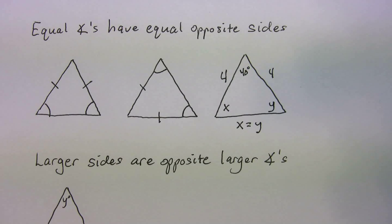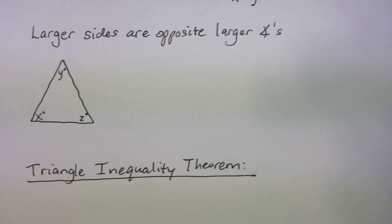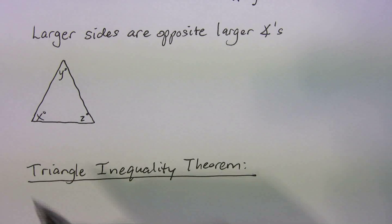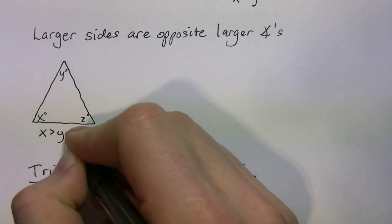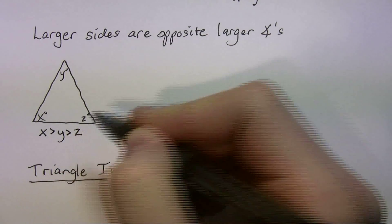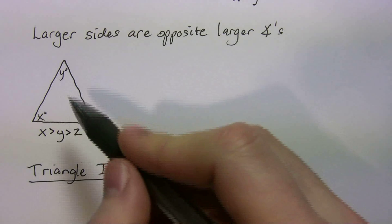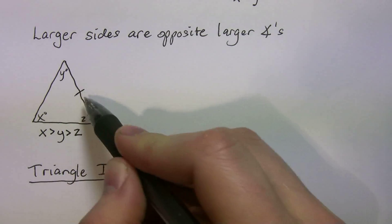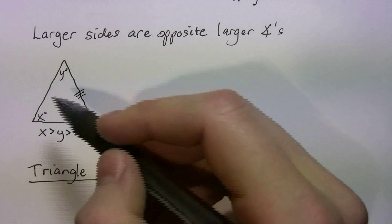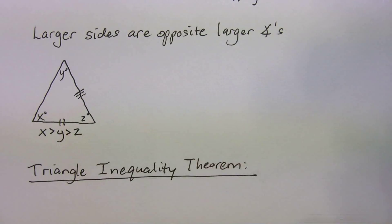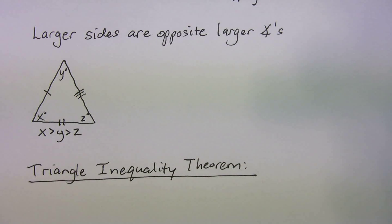Another property you should know, larger sides are opposite larger angles. So, let's say I gave you this triangle right here, and I told you that x was greater than y, and that's greater than z. So, x is the biggest, then y is the biggest, then z. So, if x is the biggest, that's the biggest side. We'll put three lines to make it the biggest side. Y is the second biggest one, so that's the second biggest side, and z is the smallest, so that's your smallest side.